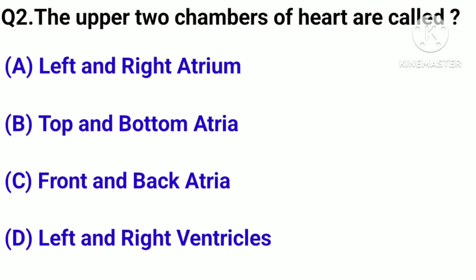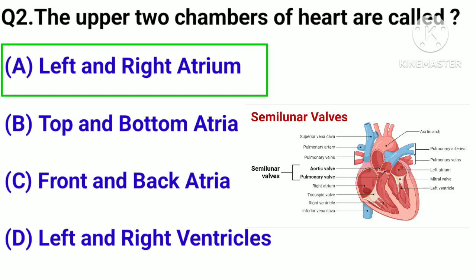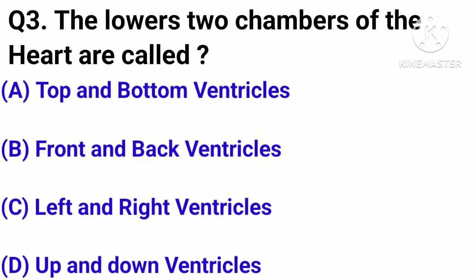Question number 2. The upper 2 chambers of the heart are called? Option A: Left and right atrium. Option B: Top and bottom atria. Option C: Front and back atria. Option D: Left and right ventricle. Correct answer: Option A.